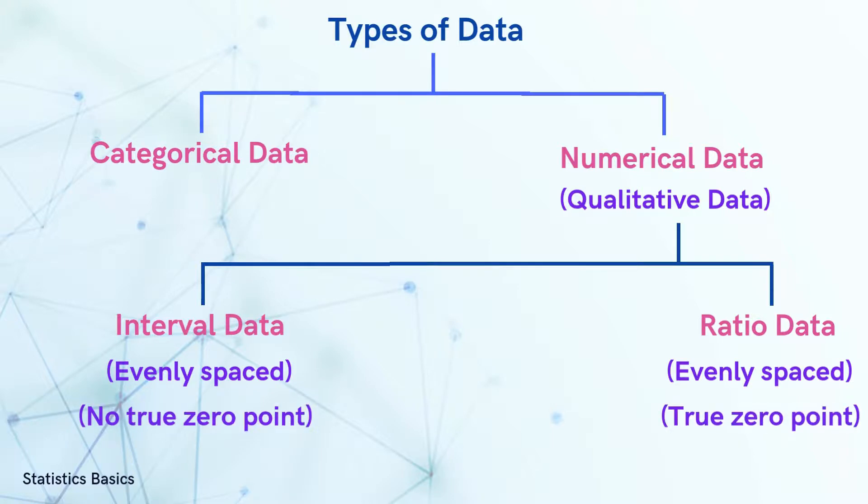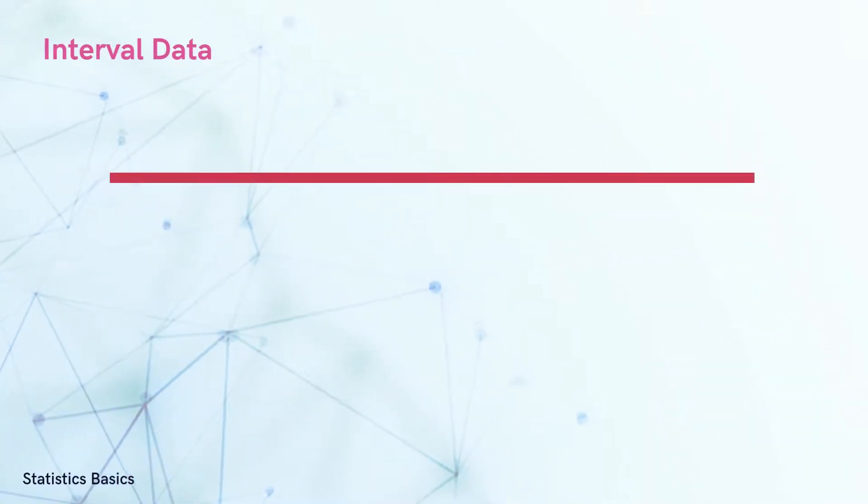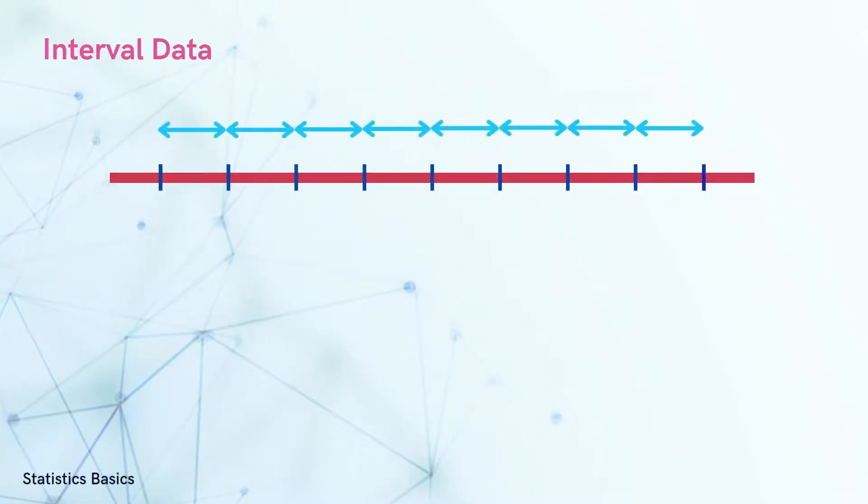Interval data lacks a true zero, whereas ratio data is characterized by a meaningful zero. Imagine this number line represents a scale for measuring something. In interval data, there is a meaningful order and numbers are evenly spaced.